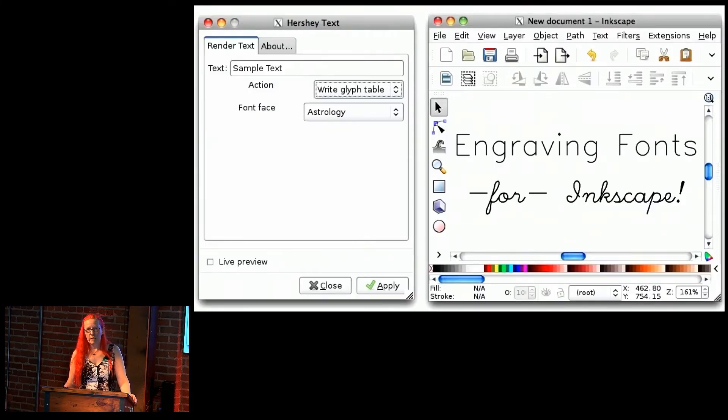We also created a tool for doing stroke-based text. One of the problems with vector machines is that you need vectors for the pen to follow, and traditional fonts are defined as outlines, and people kind of get cranky when their letters draw, it takes so long to draw, because you're drawing the full outline of the letter. So we made a Hershey Text extension for Inkscape that renders vector text.